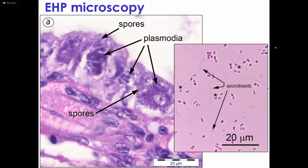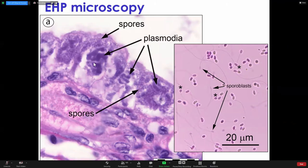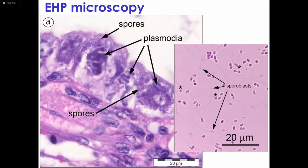Looking at this parasite, here is a photomicrograph showing the plasmodium stage inside — it has finger-like projections, like a net of protoplasm. Here are the spores at very high magnification with the oil immersion lens, so they are quite difficult to see in fixed section because they shrink a bit. Here is a wet mount with spores that have extruded the polar filament, and at the end of the polar filament you can see the extruded sporoplast, which, if it attaches to a cell, can enter the cell and begin to grow inside it.